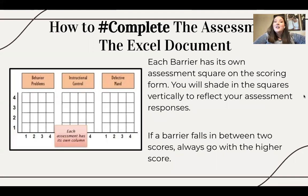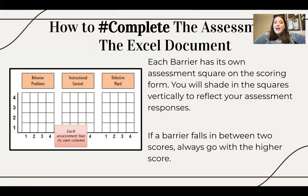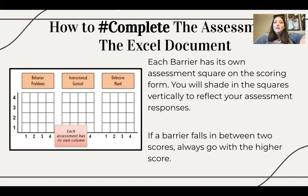Continuing with how to complete the assessment using the Excel document — a lot of you will be familiar with this because it's like the typical ABLES. Each barrier assessment has its own assessment square on the recording form. You will shade in the squares vertically to reflect your assessment responses. On the x-axis of the graph, that represents your session — so every six months. On the y-axis, that is your score for the barrier, and you're going to color that in.